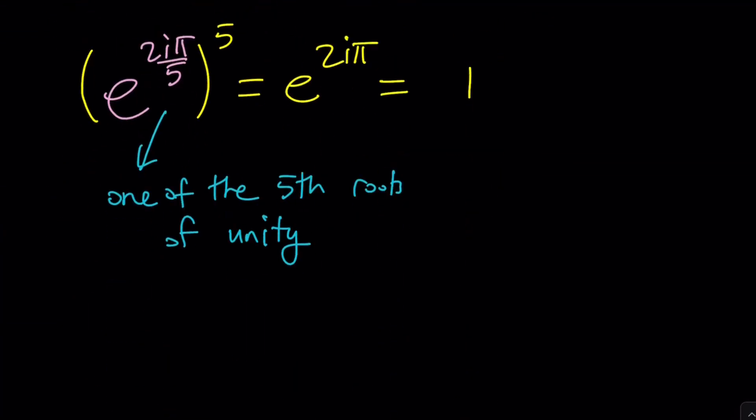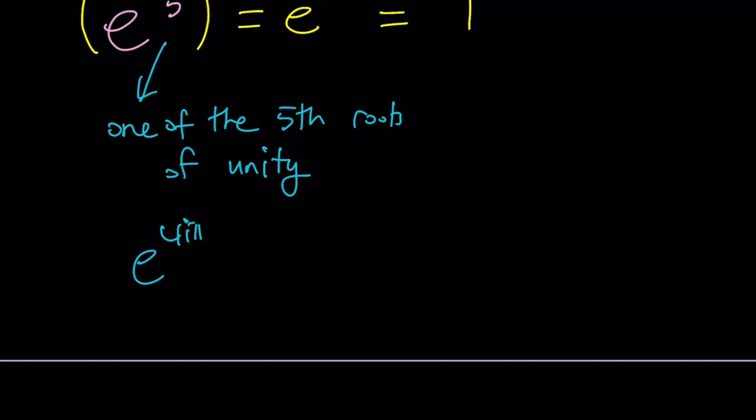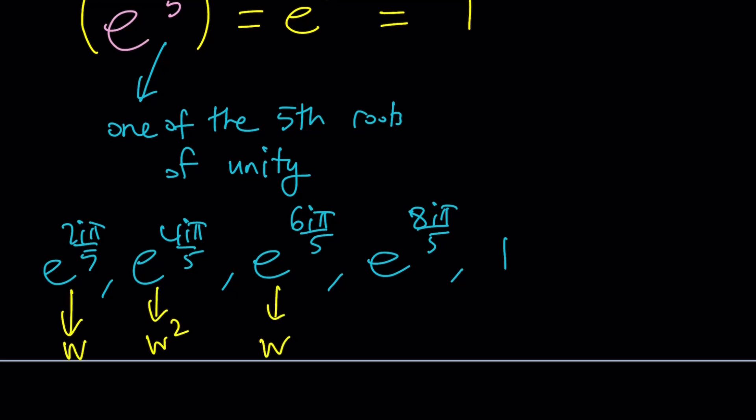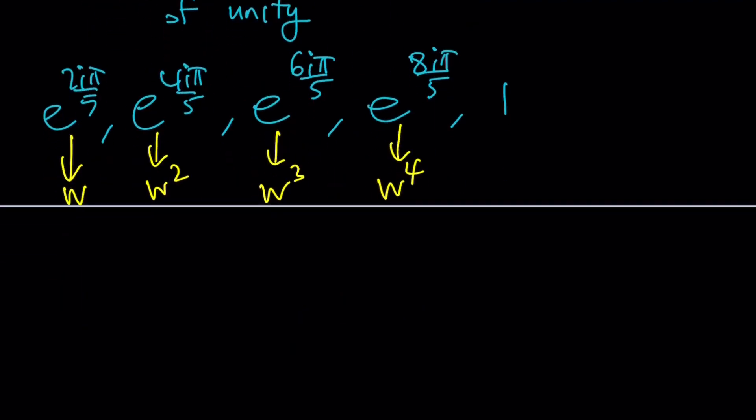One of them is this one. The other one is, if you double this, so e^(4πi/5) is another one. And then, if you continue this pattern, e^(6πi/5) is the third one. e^(8πi/5) is another one. And last but not least, e^(10πi/5), or just 1, is going to be another 5th root. So we're talking about their sum. So let's go ahead and name these something. How about naming this w. Then this is going to be w². This is going to be w³. And this is going to be w⁴. So we're basically looking at this following sum. What is 1 + w + w² + w³ + w⁴?